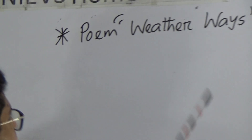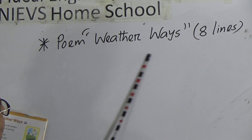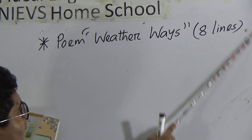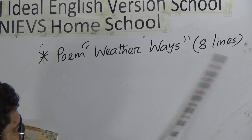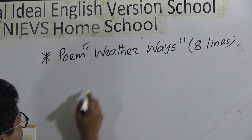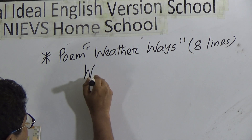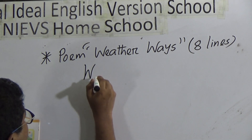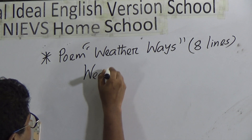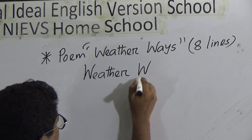My students, remember carefully: in the exam you will write only eight lines of the poem 'Weather Ways'. How many lines? Eight lines. First, you have to write the topic of the poem.